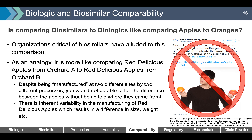It is worthwhile pointing out how organizations critical of biosimilars use terms incorrectly. The Biosimilars Working Group produced a tweet claiming that biologics and biosimilars are as different as apples and oranges — this claim is misleading and uses the term 'similar' inappropriately. This misinformation is primarily targeted at patients to reduce their confidence in biosimilars. A better analogy would be comparing Red Delicious apples from Orchard A to Red Delicious apples from Orchard B — despite being manufactured at two different sites by two different processes, you would not be able to tell the difference. There is inherent variability in their manufacture, but it's important to understand when these terms are used to create confusion.